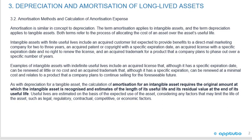Intangible assets with finite useful lives include an acquired customer list expected to provide benefits to a direct mail marketing company for two to three years, an acquired patent or copyright with a specific expiration date, an acquired license with a specific expiration date and no right to renew, and an acquired trademark for a product that a company plans to phase out over a specific number of years.